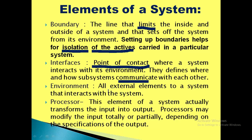Environment consists of all the external elements to the system that interact with it. The processor is the main element of the system — it actually transforms the input into the output, converting input into the required output. The processor can modify the input totally or partially, depending upon the specifications of the output requirement.